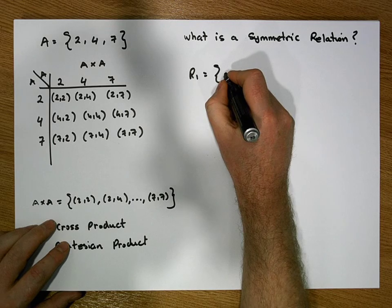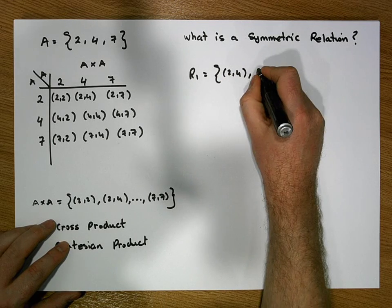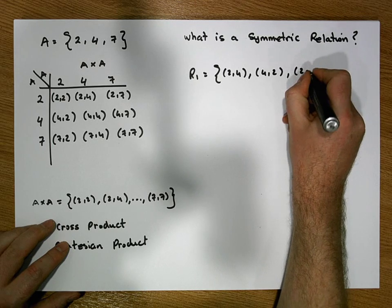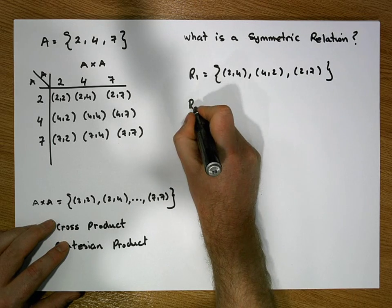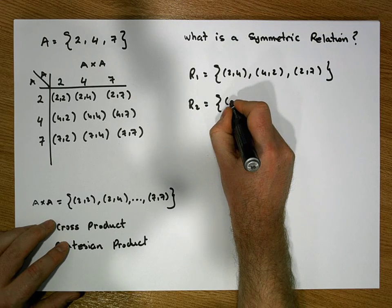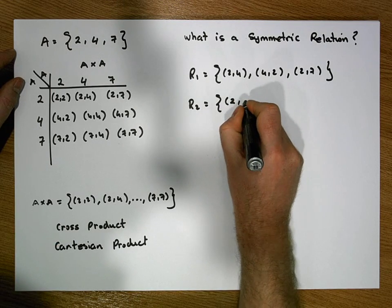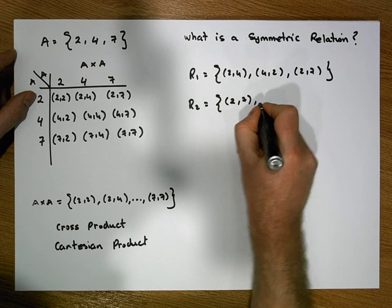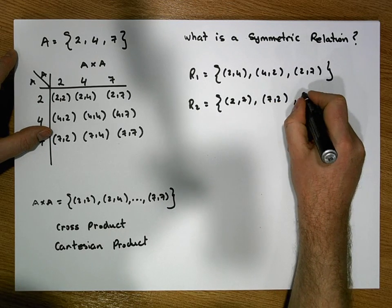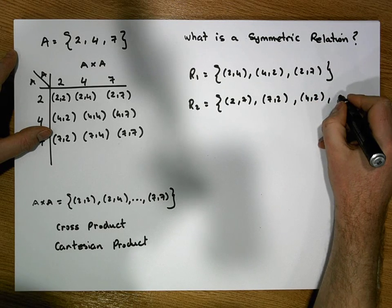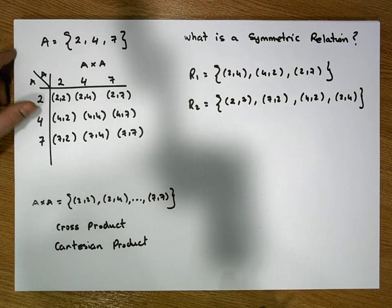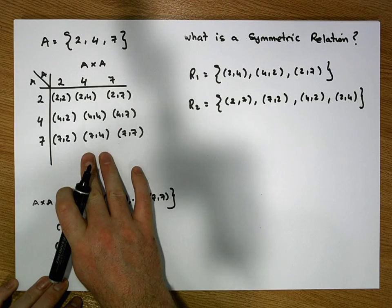Let's say R1 contains (2,4), (4,2), and (2,7). I might take R2 to be the values: (2,2), (7,7), (7,2), (4,2), and (2,4). Just those two examples — these are subsets of the cross product.